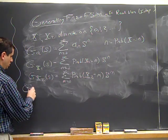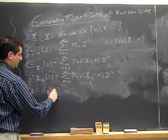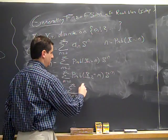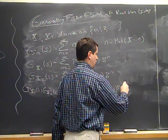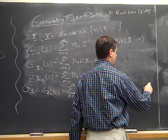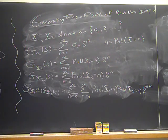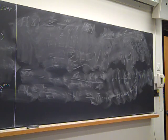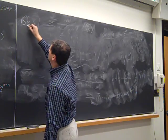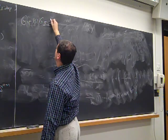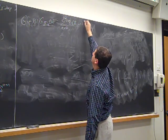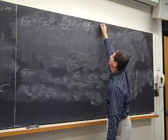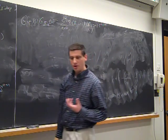So G_{X1}(s) times G_{X2}(s) is going to be the double sum, n and m each going from 0 to infinity, of the probability X1 equals n times the probability X2 equals m, times s to the n plus m. When you look at this, it's not written well — it's written correctly, which is a good start, but I don't really like how it is written, because the exponent is s to the n plus m.